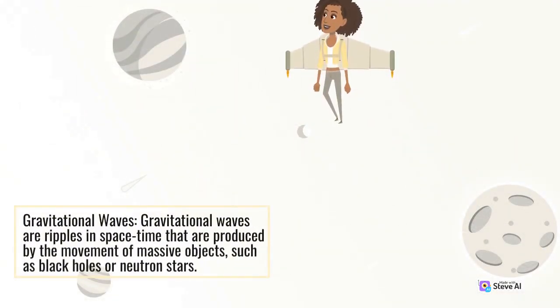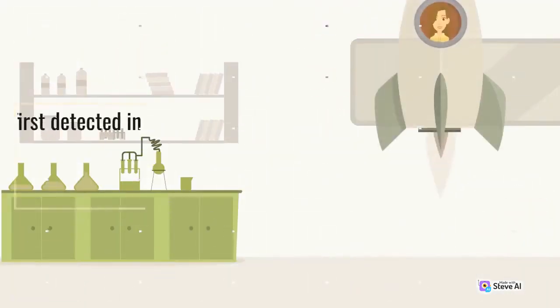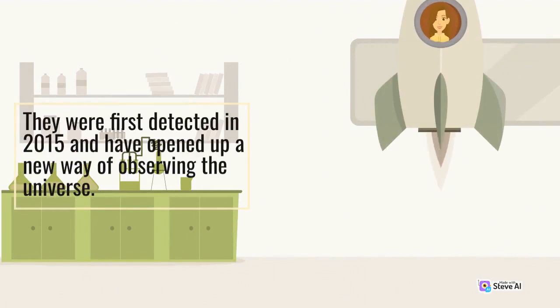Gravitational waves are ripples in spacetime that are produced by the movement of massive objects, such as black holes or neutron stars. They were first detected in 2015 and have opened up a new way of observing the universe.